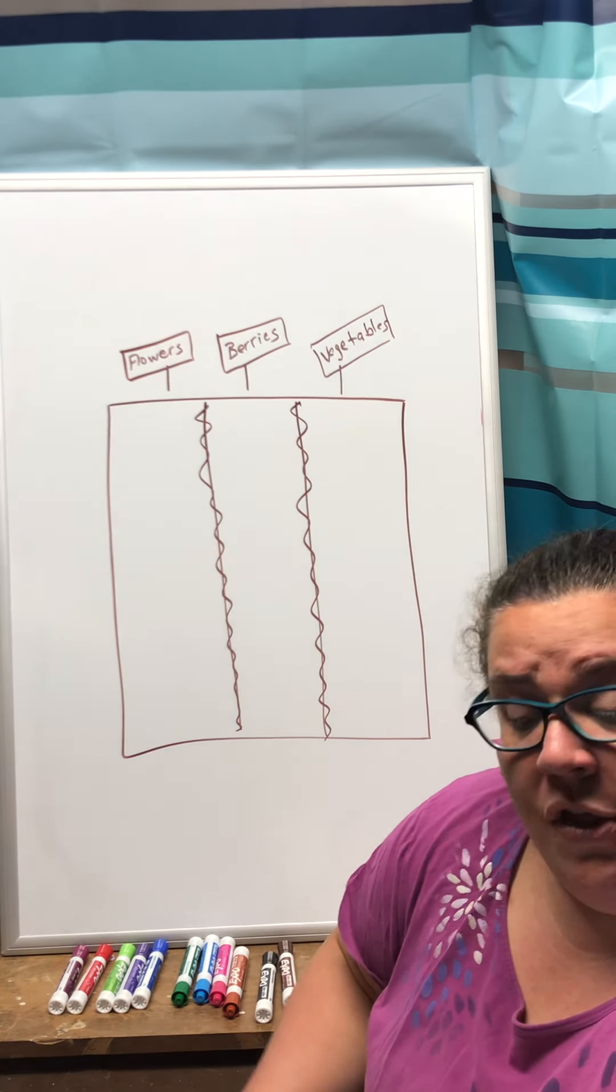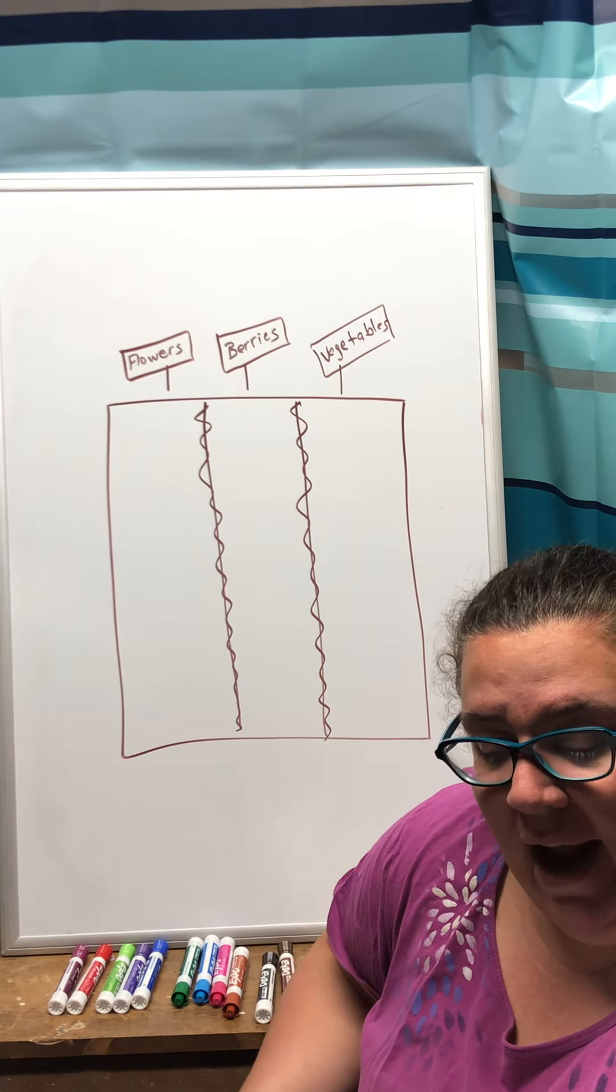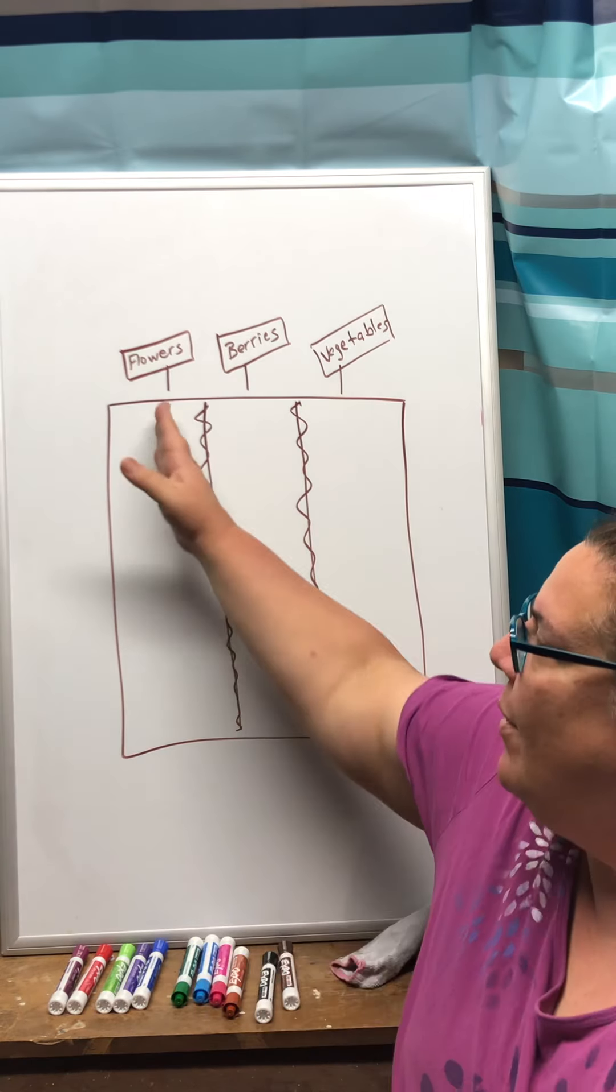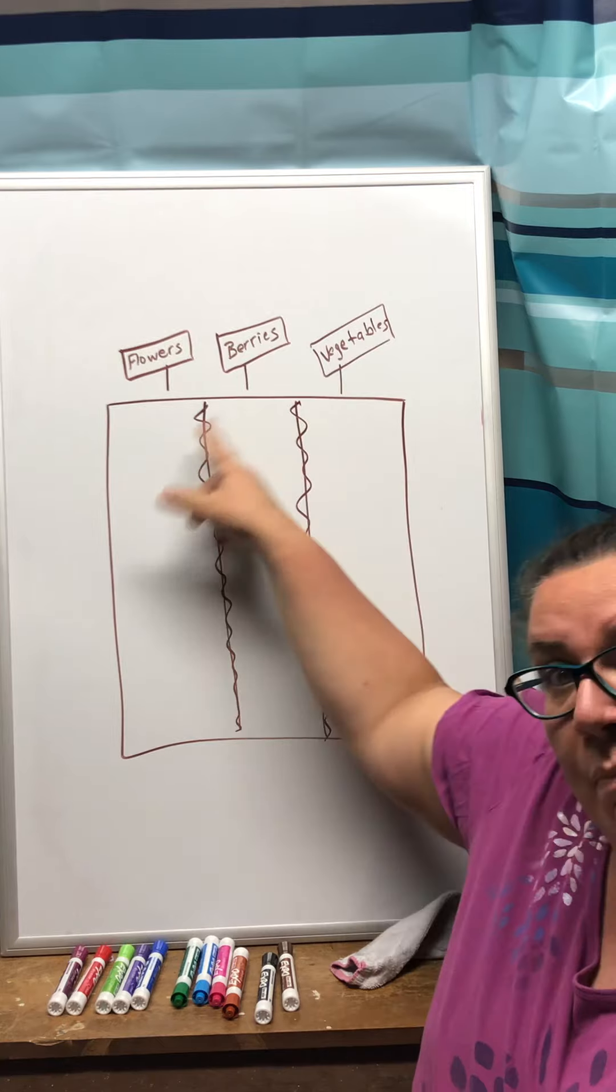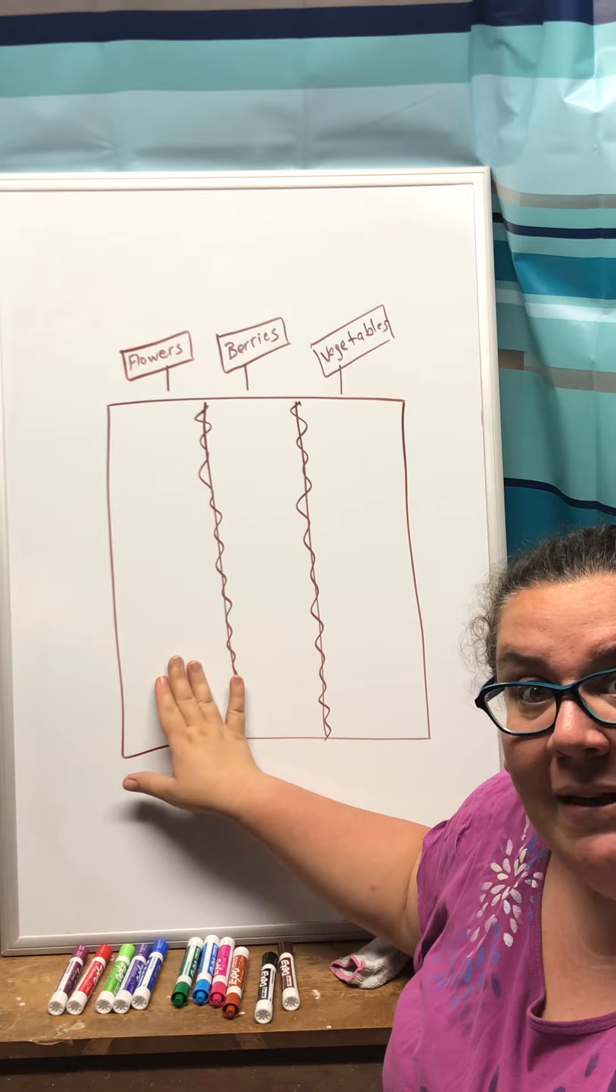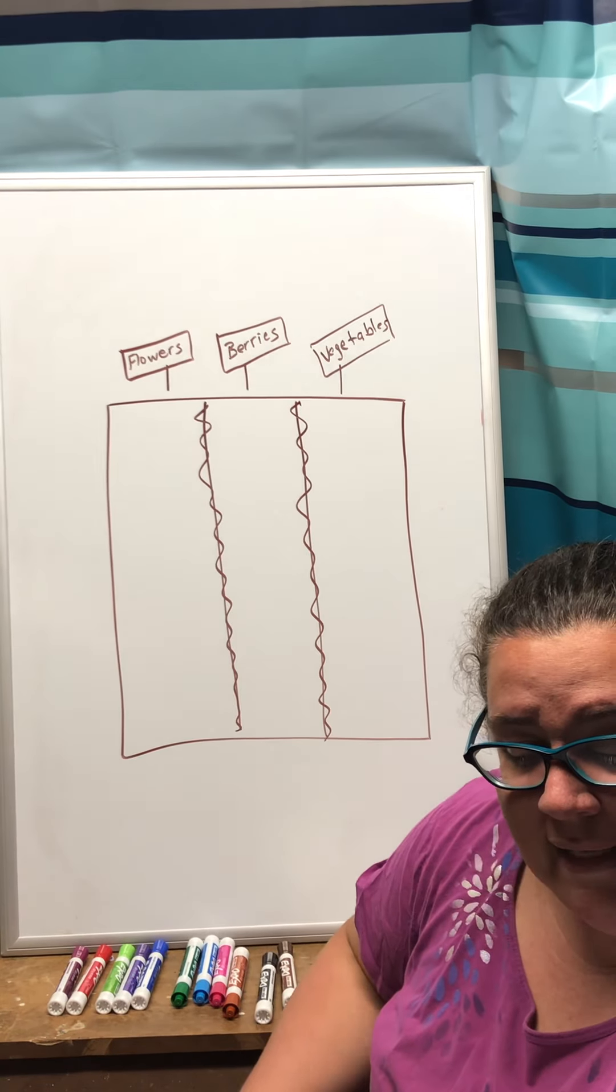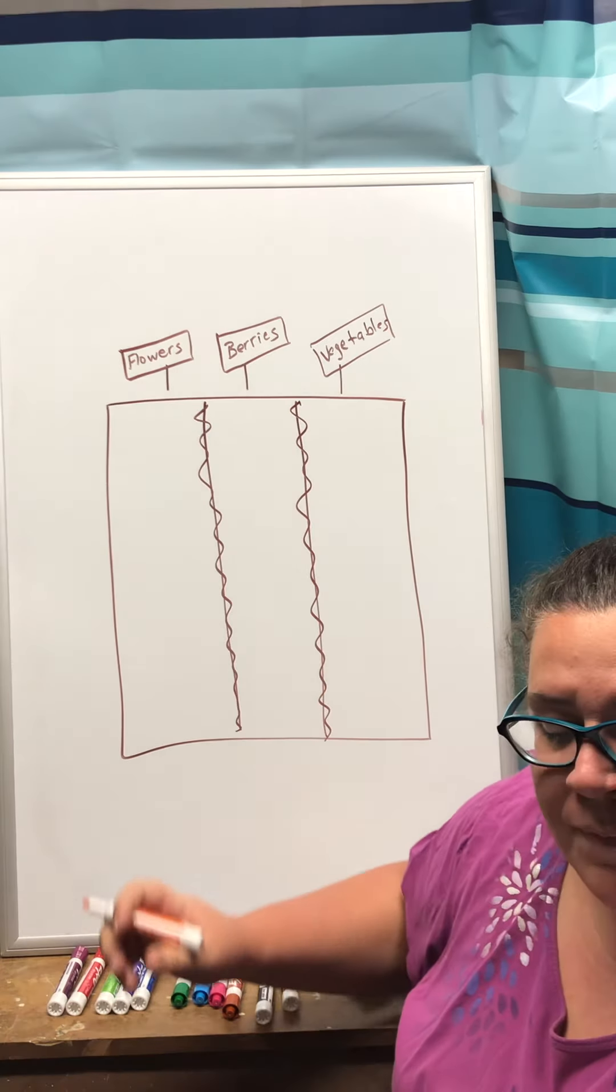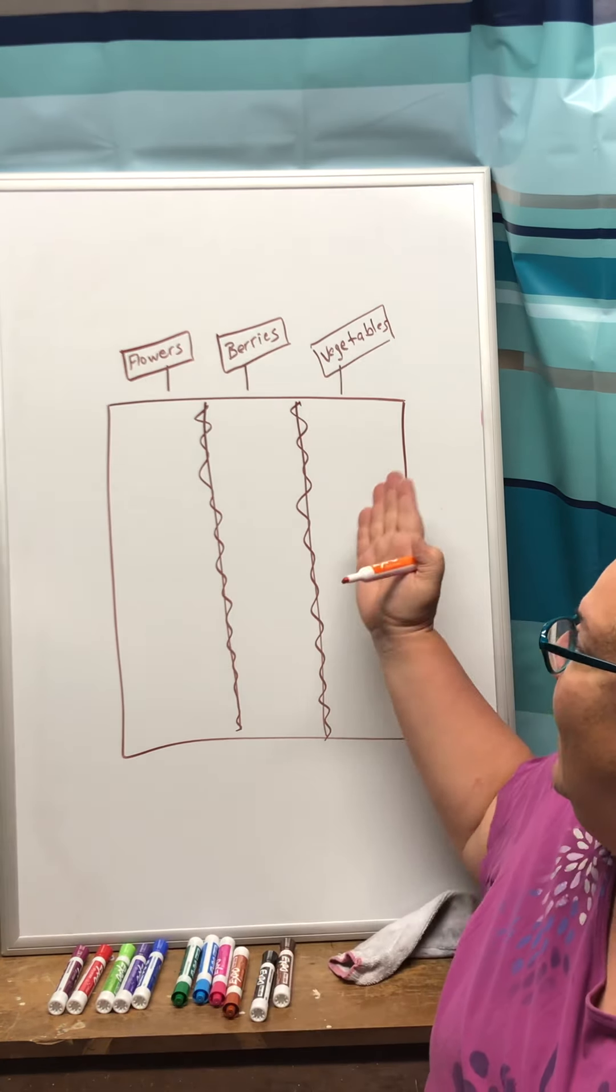The Brown family is planting 1/3 of their garden with flowers, so they took the entire garden plot and they cut it into three pieces. So the first third is going to be flowers, the second third is going to be berries, that's the middle section, and 1/3 is going to be vegetables.